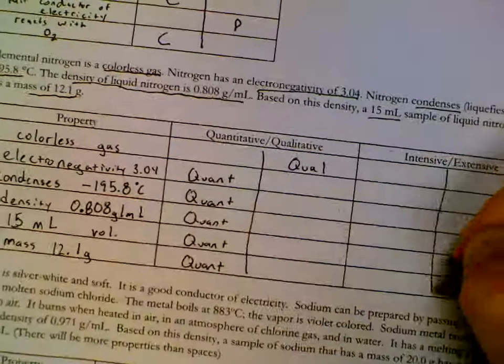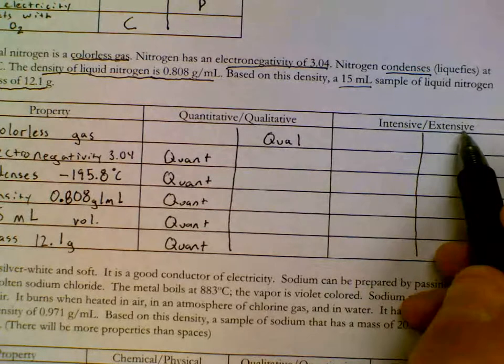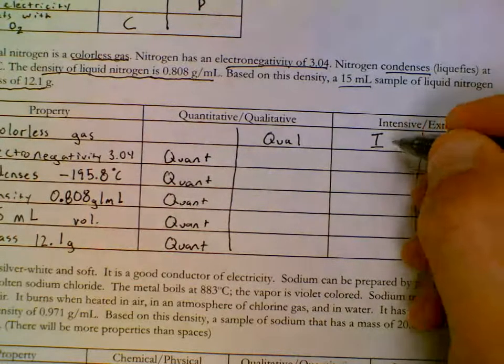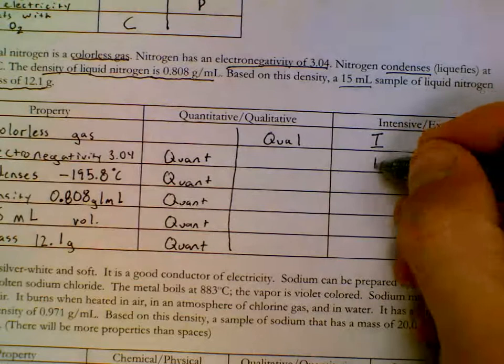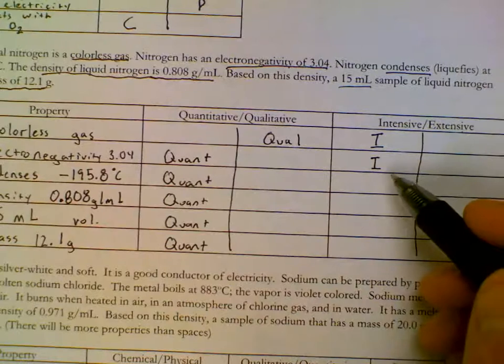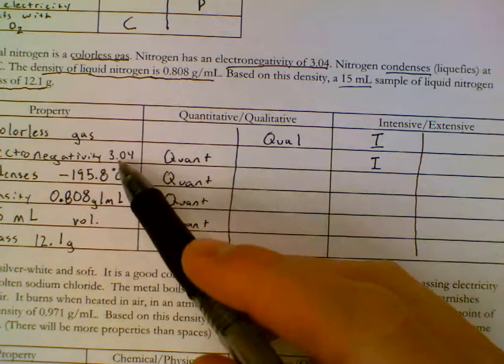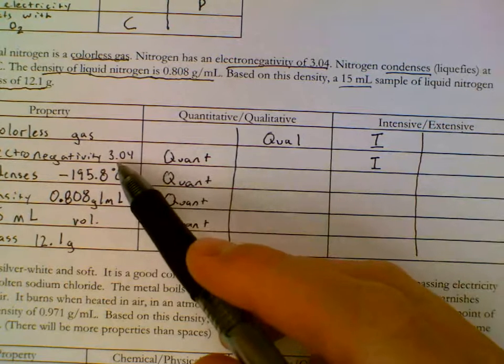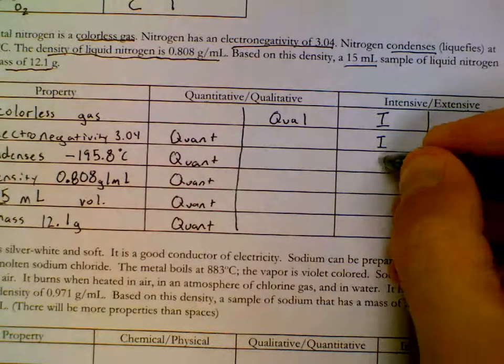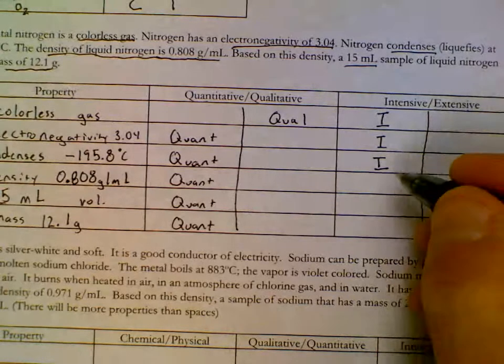Intensive versus extensive. Same description no matter how much sample. Description changes with sample size. So, colorless gas. Always the same. Electronegativity. That's one that you might not know about. Electronegativity is describing how much the substance, those atoms like to share electrons. It doesn't matter if we have a lot of nitrogen or a little. Condenses at this temperature. A lot or a little will condense. Just like a lot or a little will boil at a given temperature.